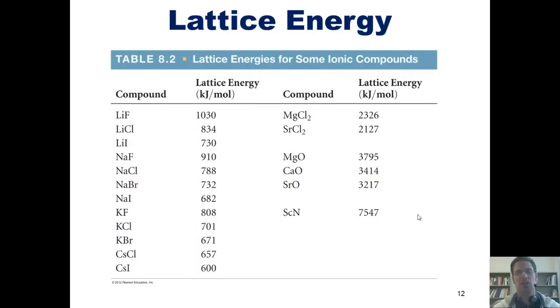This table shows us a number of lattice energies for various ionic compounds. As we analyze it, you'll notice, for example, that separating sodium and fluoride requires 910 kilojoules per mole. Separating magnesium and oxide requires 3795 kilojoules per mole. Separating cesium from iodide requires 600 kilojoules per mole, and so forth. One of the trends you should notice is this: the numbers get very, very big for these compounds over here. Notice for scandium nitride, the number is huge. I wonder why that is. Think about it momentarily, as I'm going to provide you with the answer shortly.